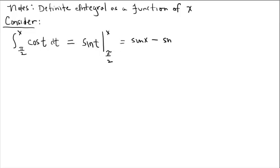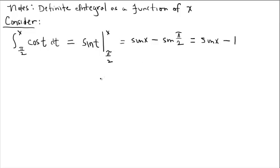The result is sine of x minus sine of pi over 2. Before, when we had another numeric limit, we would have a value and complete the problem with calculations. But notice that one part of your antiderivative will be a function and the other part will be a number. Sine of x minus the sine of pi over 2 is 1 — that's as far as we can take this problem.